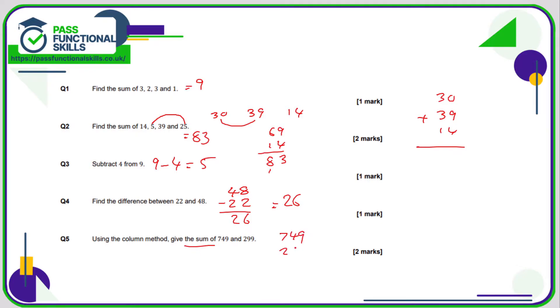I'm just going to put one number on top of the other and make sure that the units, tens, and hundreds are in line, which is quite easy because both numbers are three-digit numbers. Nine plus nine is 18, eight carry the one. One plus nine is 10, 10 plus four is 14, so four carry the one. Seven plus two is nine, plus one is 10, so the answer is 1048.